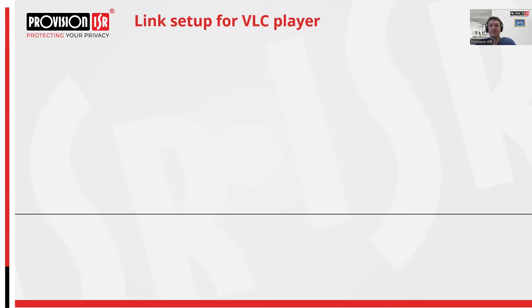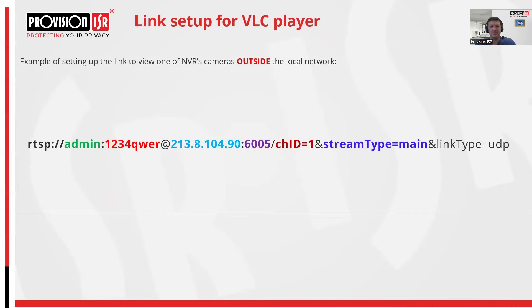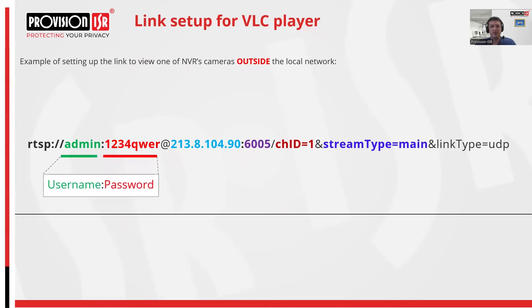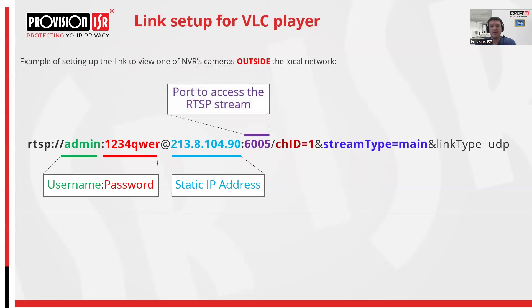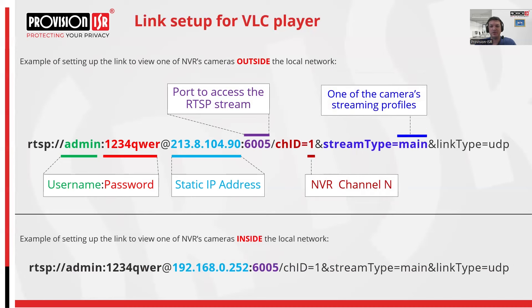Now let's explore how to construct the RTSP link to access a specific channel on an NVR via the VLC player. In the first example, when accessing an NVR located outside our local network behind a router with a static IP address, begin with the username and password credentials of the NVR. Follow with the router's static IP address and RTSP port. Then specify the channel number and finally conclude with the quality type. If accessing the NVR within our local network, simply replace the router's static IP address with the NVR's local IP address.